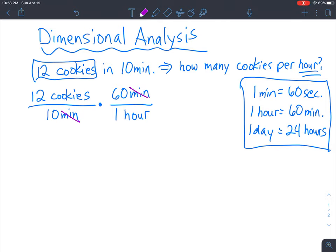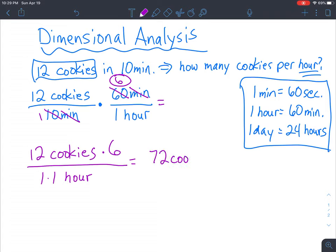And we can, at this point, we also want to reduce our fraction most likely. So 10 goes into 60 six times, and that's a 1. So when you multiply, you end up with 12 cookies. We don't have minutes anymore, so it's just times 6 over 1 times 1 hour. And multiply all your numbers together, and we end up with 72 cookies over 1 hour. And the way you generally write it is you write the units as cookies per hour. When you see a slash, you usually say per. And that is your answer.